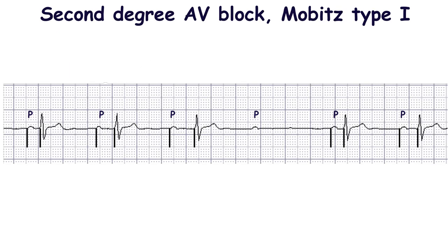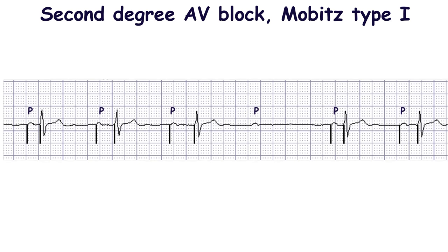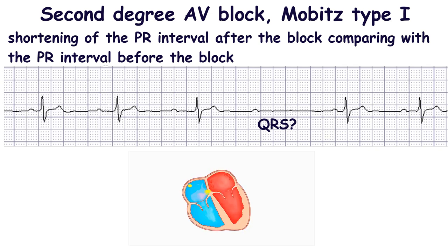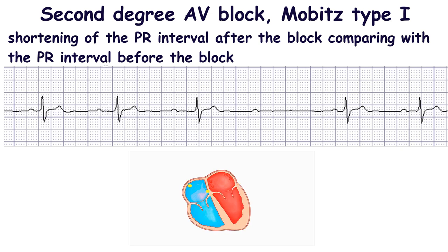The second degree AV block is divided into three subtypes. The second degree AV block Mobitz type 1, so-called Wenckebach type, is characterized by the inability of the AV node to conduct every impulse of supraventricular origin. The main feature of this block is a shortening of the PR interval after the block compared with the PR interval before the block. So the PR interval is the longest before the non-conducted P wave and is the shortest after the non-conducted P wave.